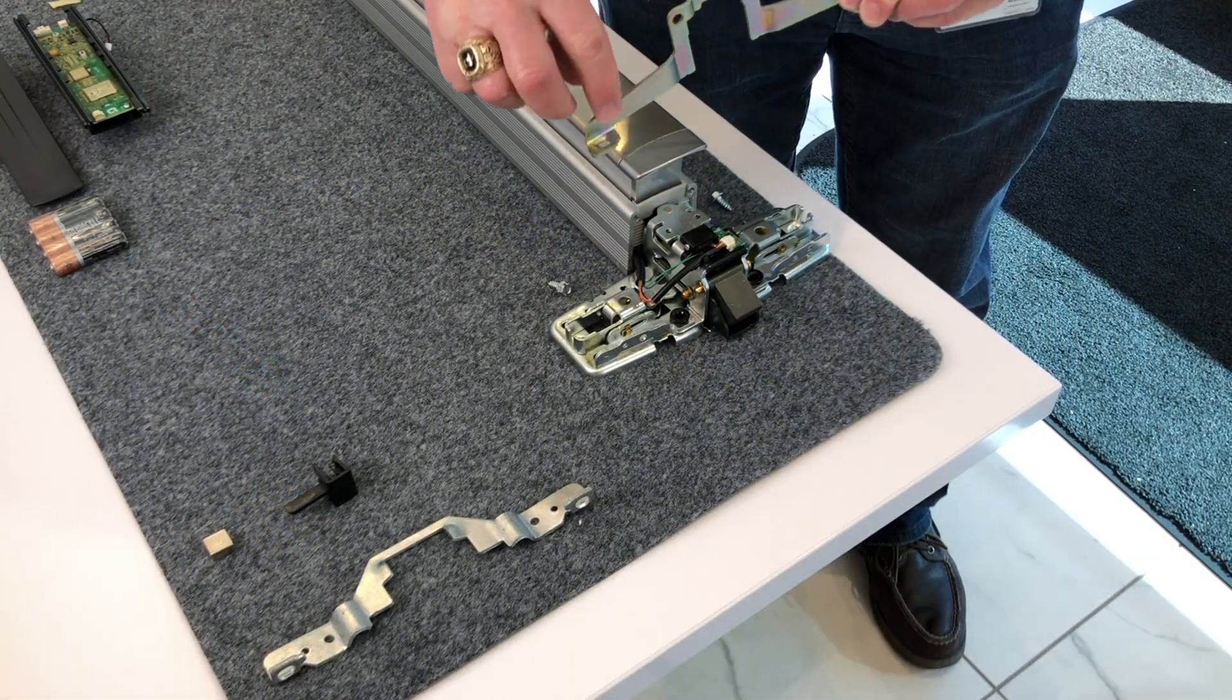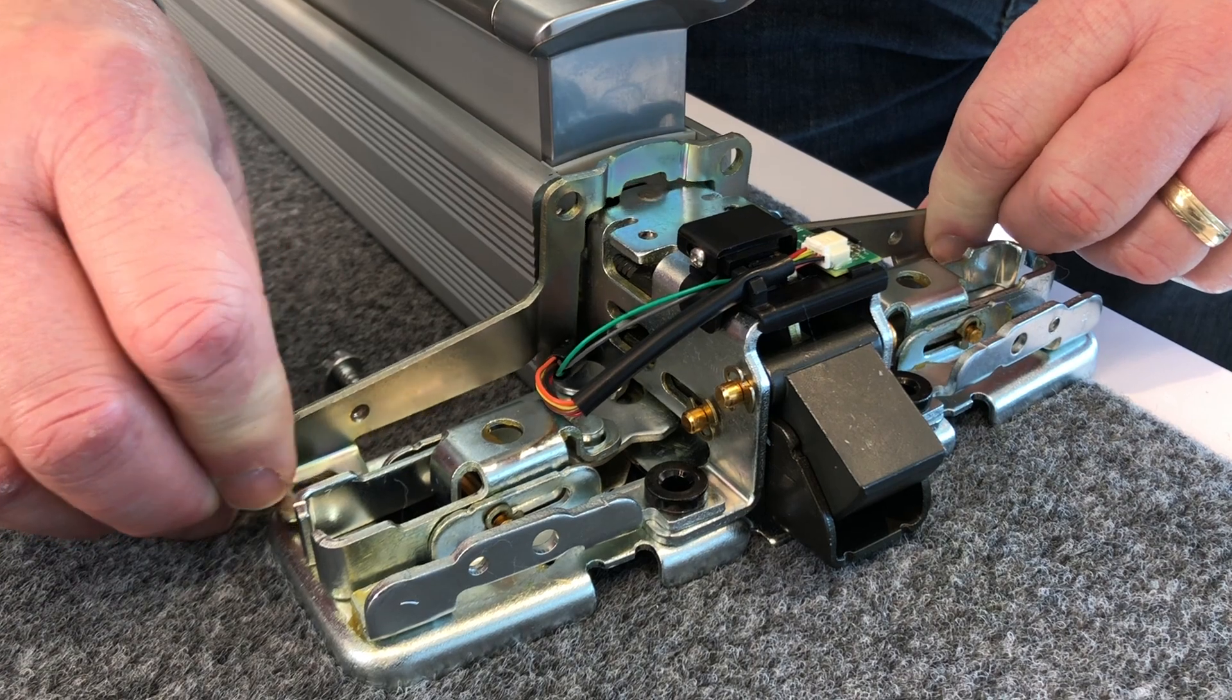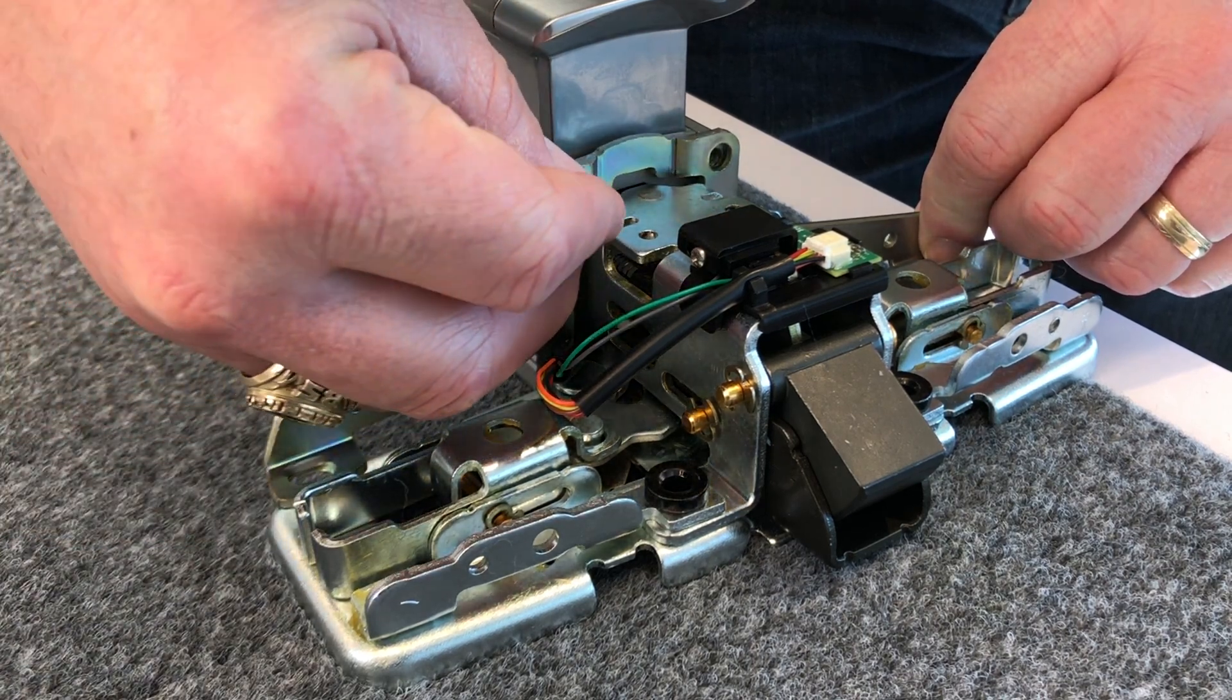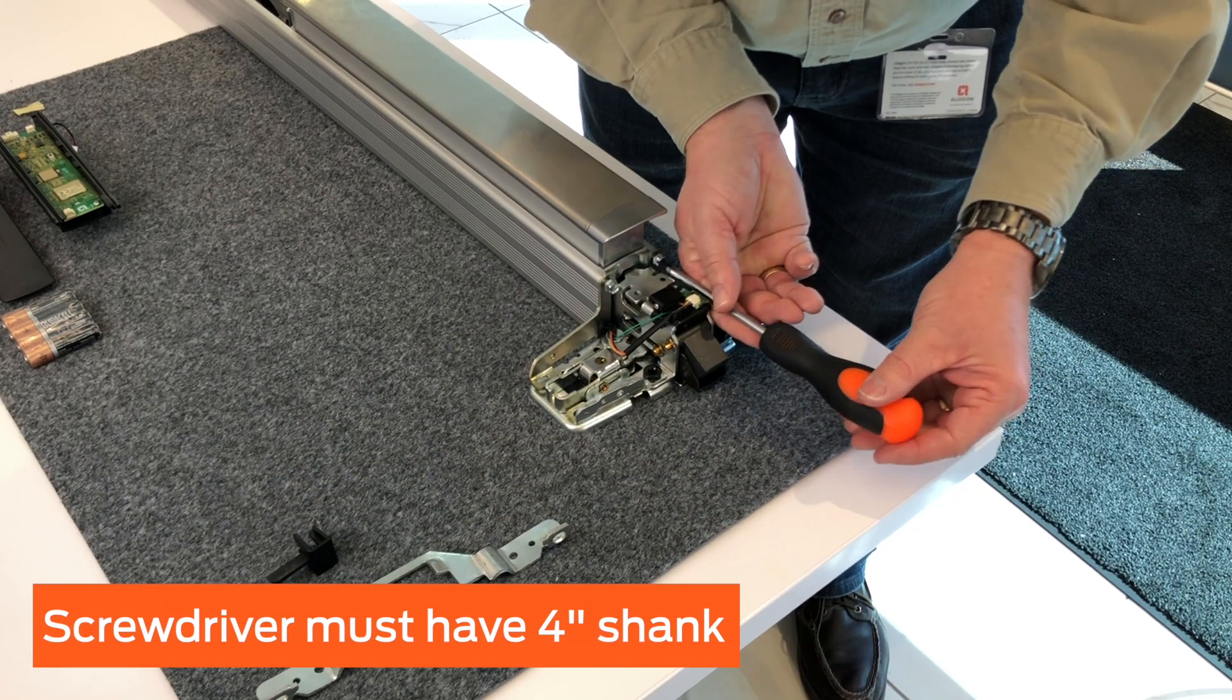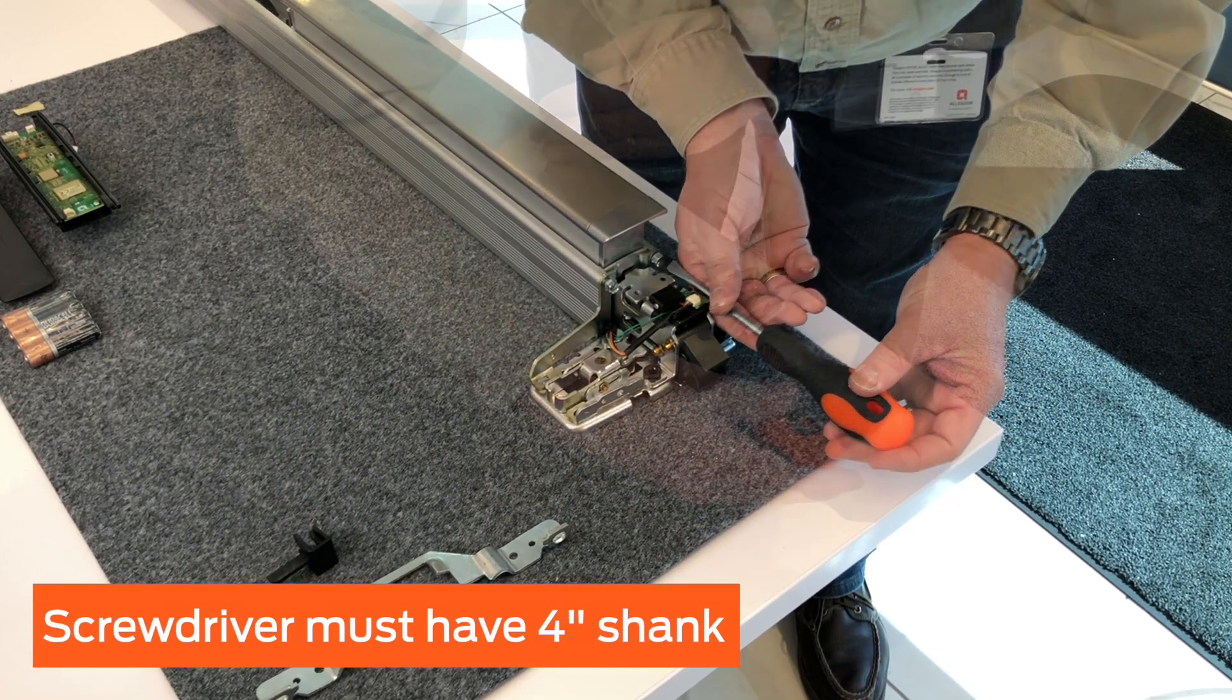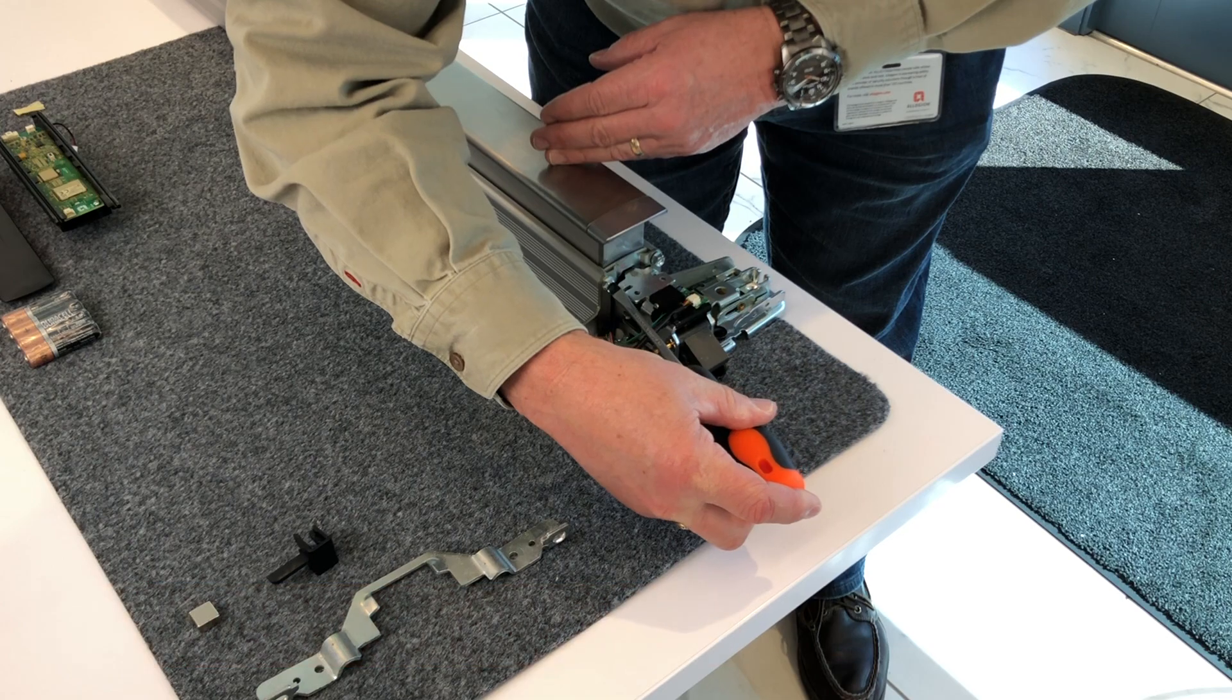Reinstall the support bracket between the center case and mechanism case and secure with the two screws. Be sure to use a screwdriver with a shank of at least 4 inches to avoid contacting the circuit board on the LX switch.